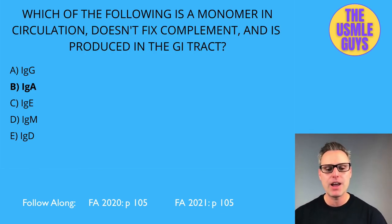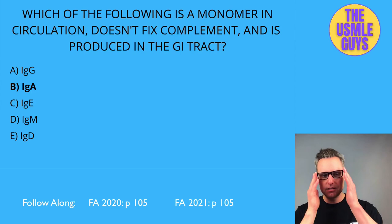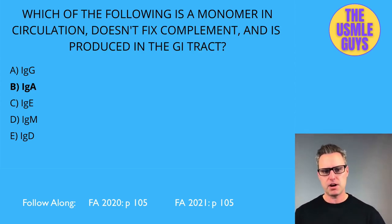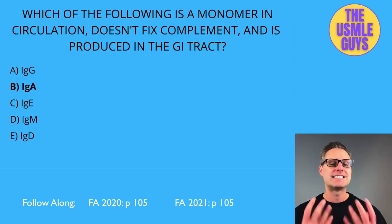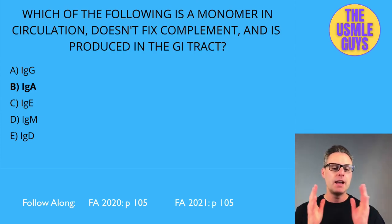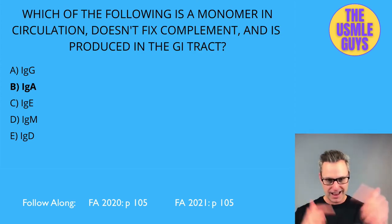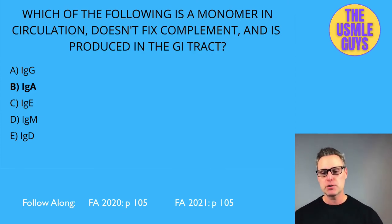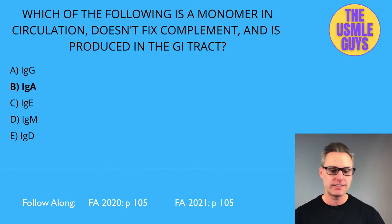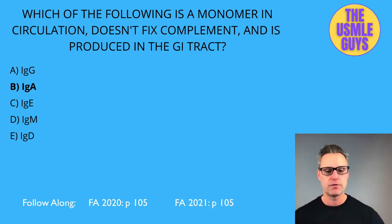IgM is the immunoglobulin produced immediately in response to an antigen — that's the primary response. IgG, by contrast, is the main antibody in the secondary response. IgM fixes complement, just like IgG. It is a monomer on B-cells but a pentamer with a J-chain when secreted. This pentamer structure enables robust antigen binding as the humoral response begins to evolve.